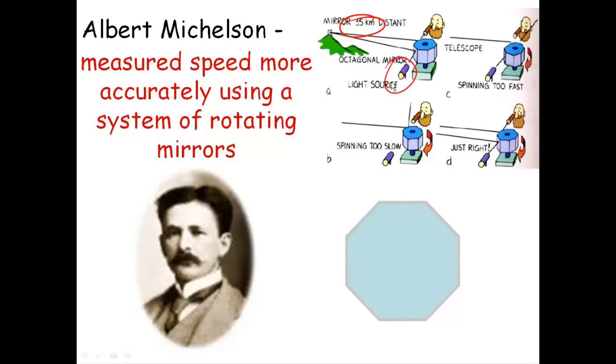He takes an arc lamp and makes it shine onto that octagonal mirror. The mirror reflects the light from the arc lamp, reflects it to that mirror on the mountain that's 35 kilometers away. That light reflects off that mirror, comes back to the octagonal mirror, reflects off that, and goes to his eye. So that the round trip distance is 70 kilometers.